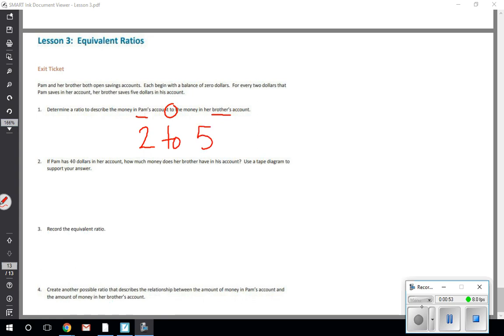So the ratio of their money is two to five. As a review, we can write that ratio with the word 'to' in it like I just did, we can write the ratio with a colon, and we could also write the ratio as a fraction. All three of these are three different ways to write a ratio.